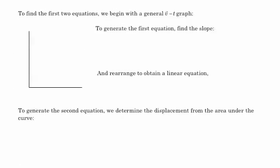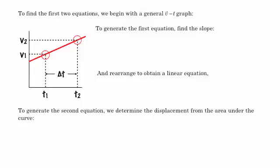The first two equations, we start with a general VT graph. We have velocity on one axis, time on the other axis. If we take two points on this line on our general VT graph, we can find the slope. Here's point one at V1 and at T1, and here's point two at V2 and T2. Note that we can always say that T2 minus T1 is delta T. We don't want to do the same thing with the velocities because we're interested in the initial velocity and the final velocity.